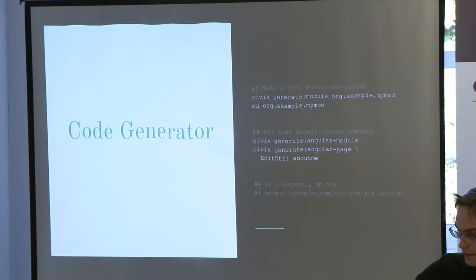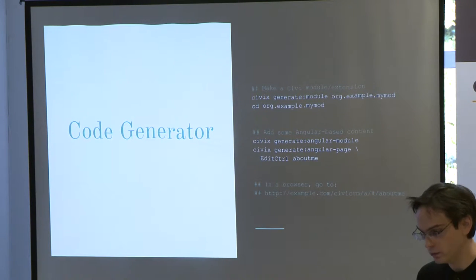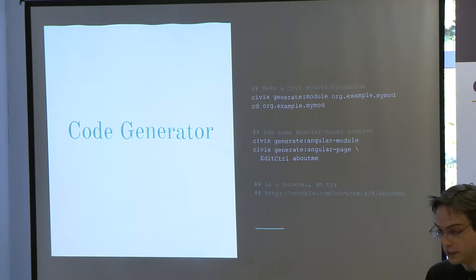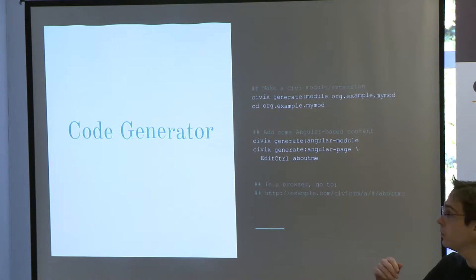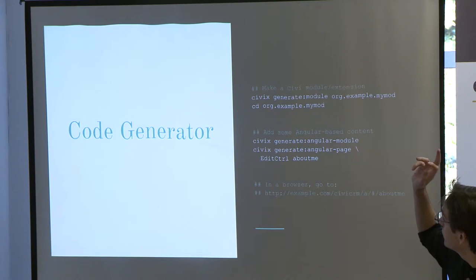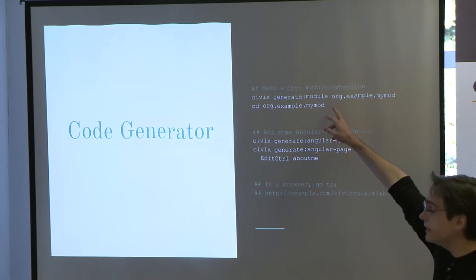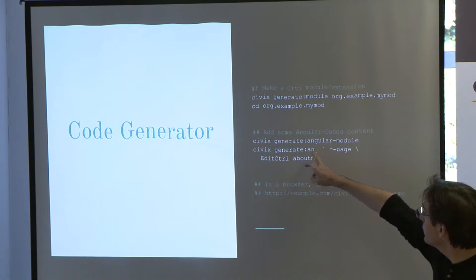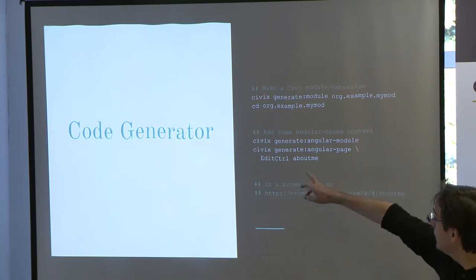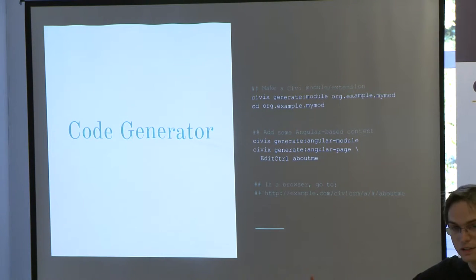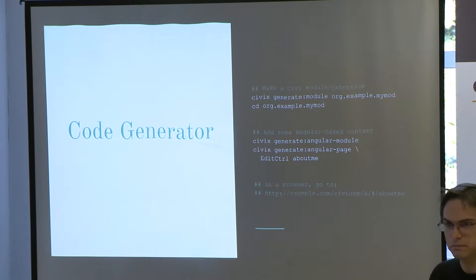Let's jump in and do a little bit with Angular. The CivX code generator — which you can download by itself or get as part of BuildKit — provides three commands of interest: generating a CiviCRM module, generating an Angular module that lives inside your CiviCRM module, and generating a page as a new screen as part of your Angular module.